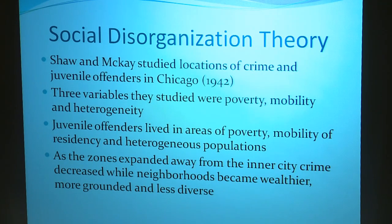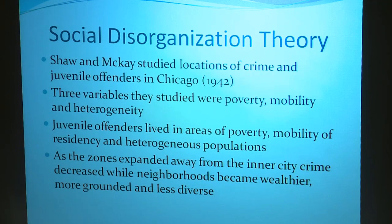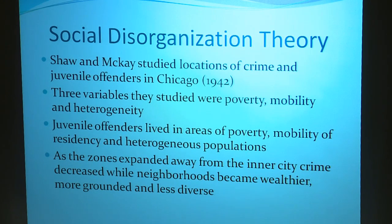They also found that examining the city in concentric zones — the inner city in the middle expanding outward to the outermost zone known as the commuter zone, which is more of a suburbia type — you'll find these are areas that are more socially organized. You have a strong economic system that is economically stable, a strong social structure, and these are the types of places where families move to and stay for generations. In these areas you have lower crime rates.